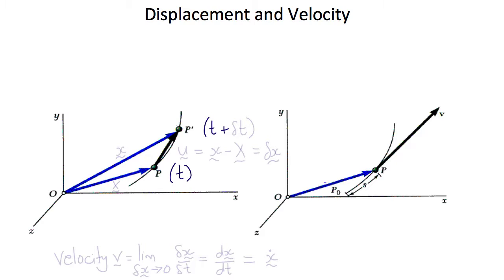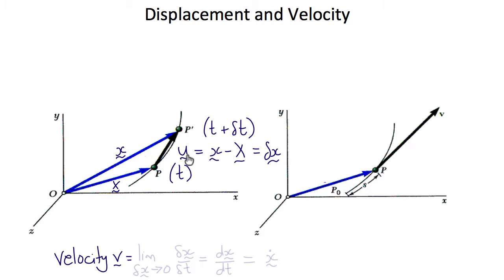Let's start by reviewing position, displacement, and velocity. Point p at time t is moving so that it's at point p-prime at time t plus delta-t. Its position at point p is denoted by the position vector capital X, and at time t plus delta-t by position vector little x. The displacement vector u is the difference between little x and big X, and for small displacements we label this delta x. Therefore the velocity vector v is the limit as delta t tends to zero of delta x over delta t, which is dx/dt or x-dot.